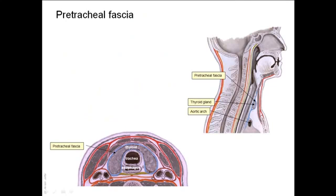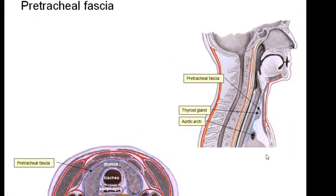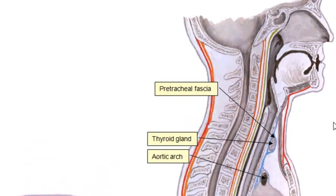This diagram shows the pretracheal fascia as the blue layer of fascia in both the sagittal and transverse sections. It surrounds the thyroid gland and is much denser in front than behind — that's why an enlarging thyroid gland tends to push backwards. It attaches the thyroid gland to the trachea, larynx, and hyoid bone. For this reason, the thyroid gland moves upwards on swallowing, which is an important diagnostic feature for lumps in the neck.